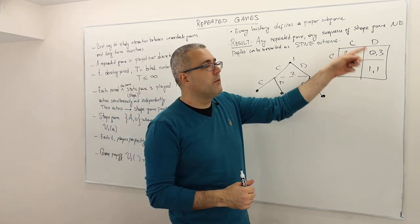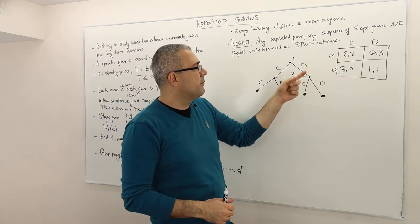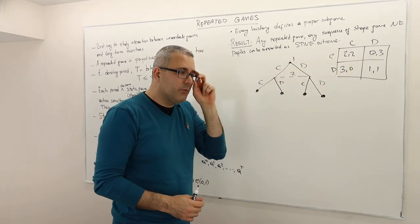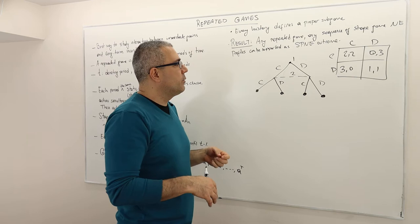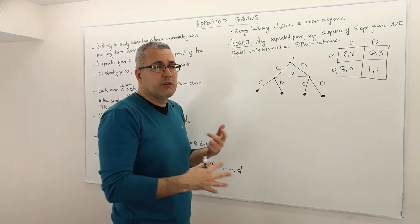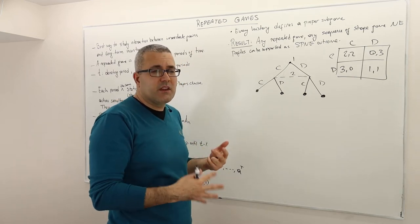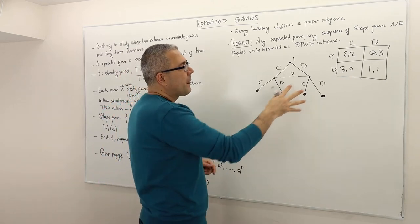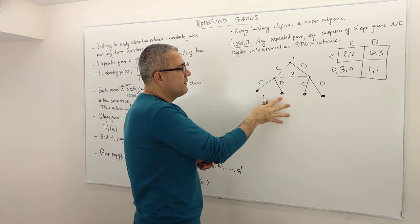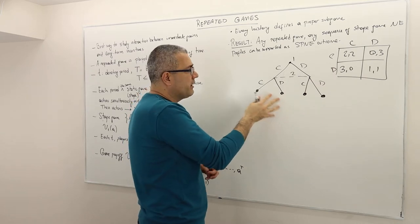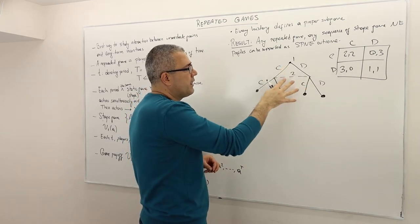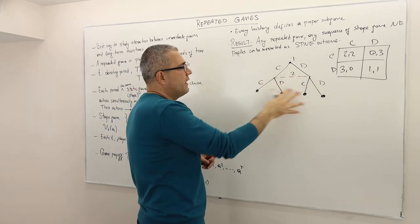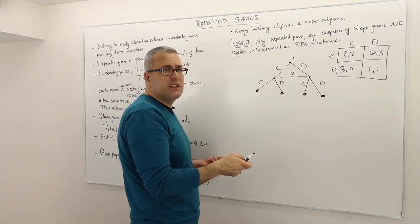Remember I was talking about this simple Prisoner's Dilemma game, where each player has two actions. What would the game tree look like if we try to draw it? This static game can be represented as a game tree where player one moves first, and then player two cannot observe player one's moves and chooses actions either C or D.